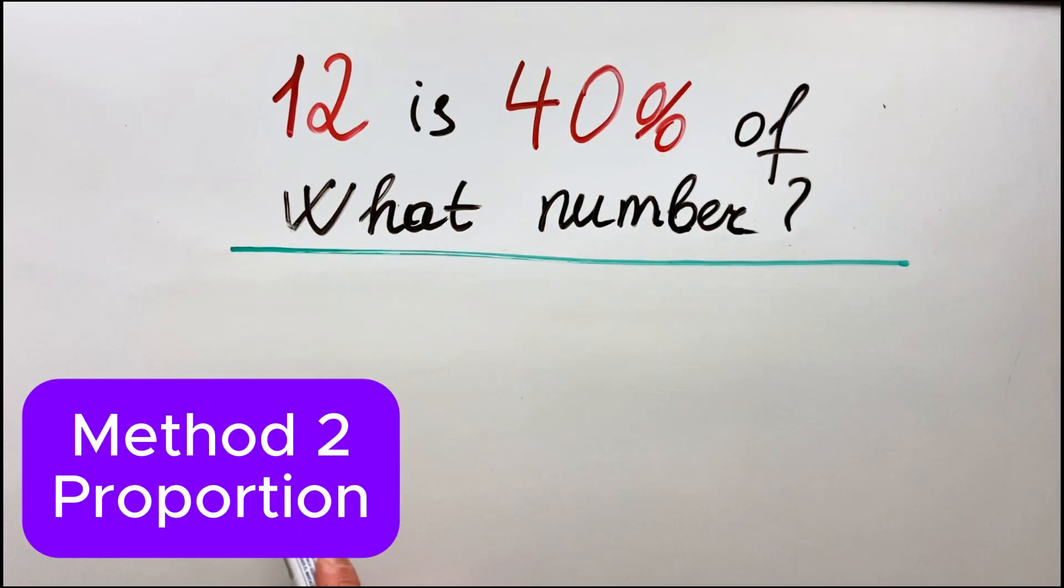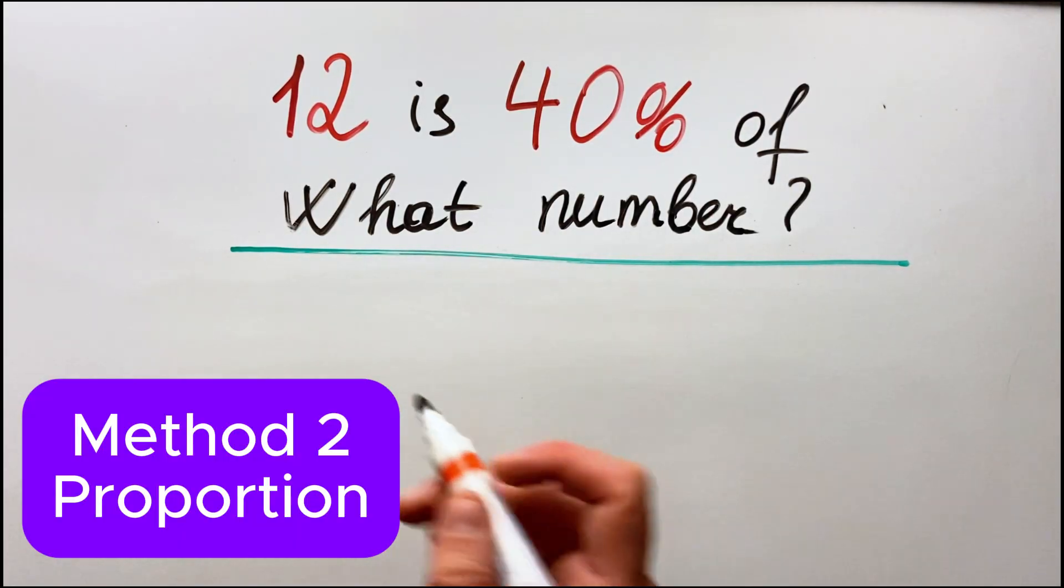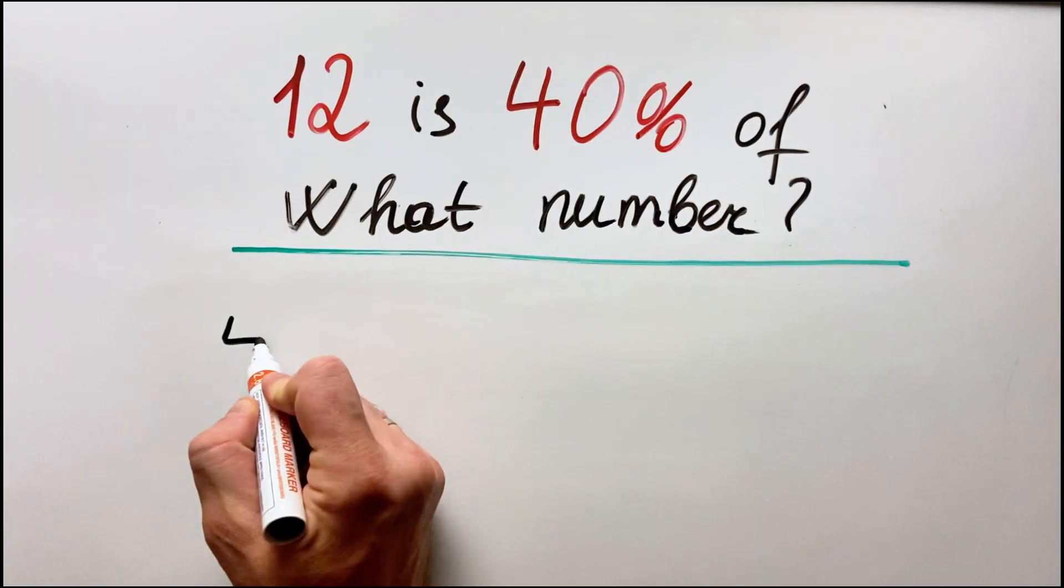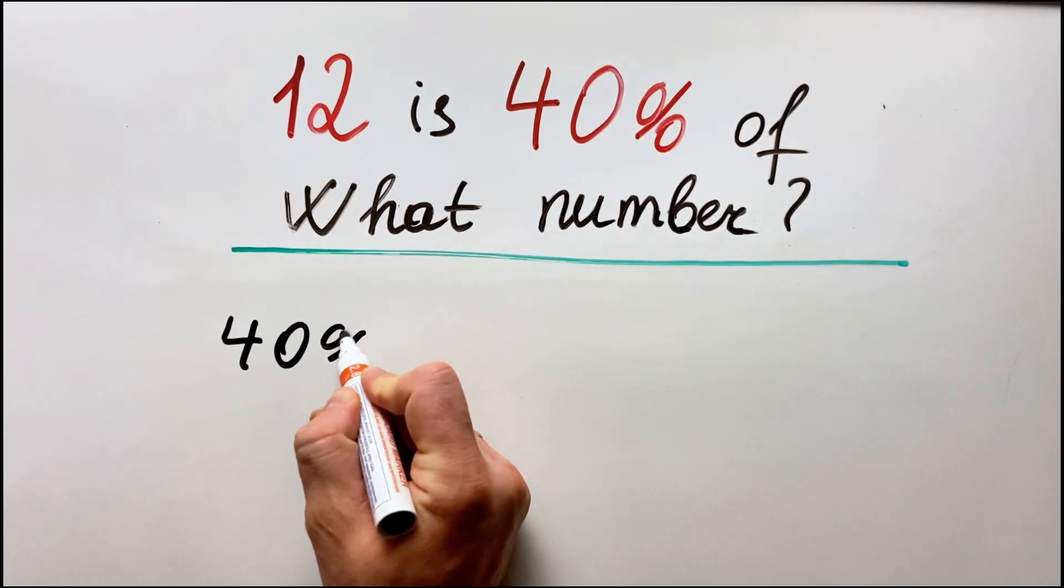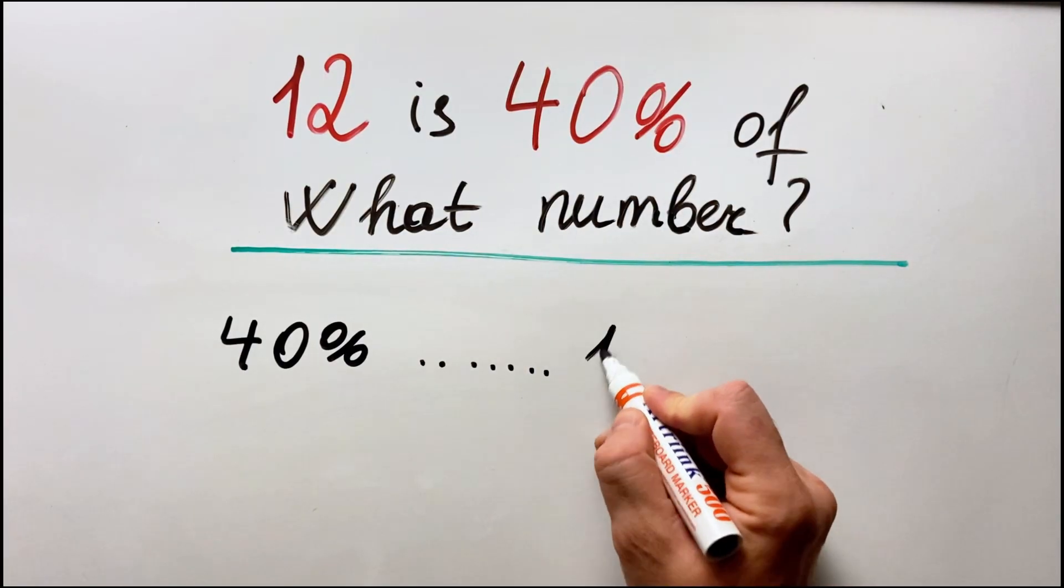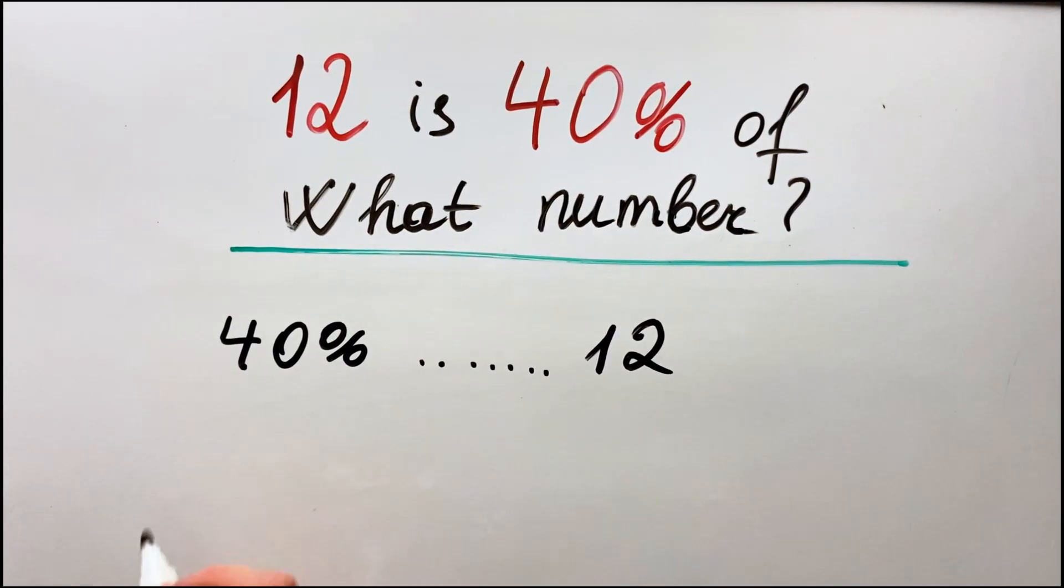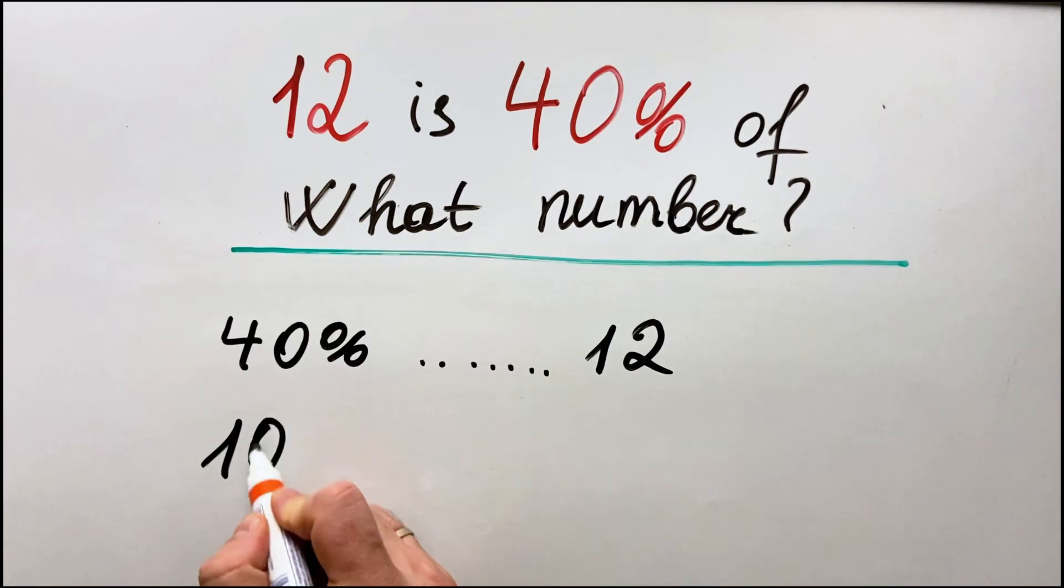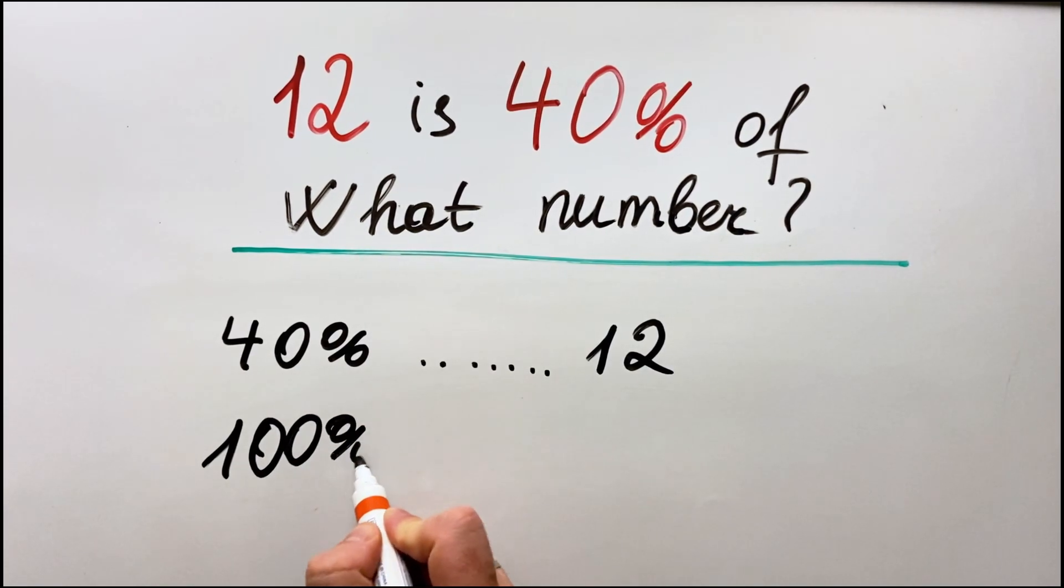So now what we'll use is the proportion, meaning that we have 40 percent, we can write it as like this is 12, and we need to find out how much is 100 percent.